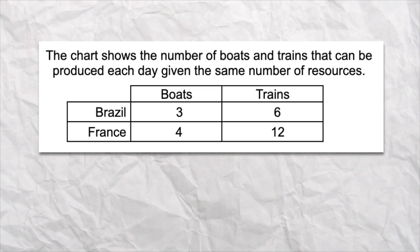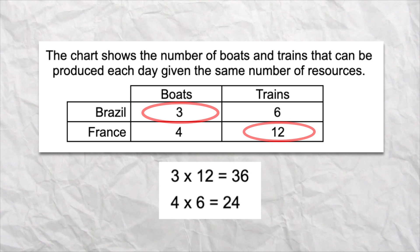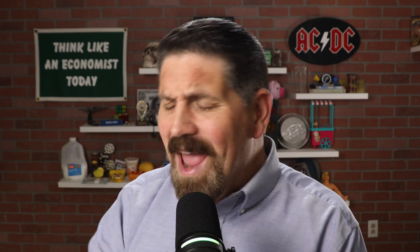Let's try it again. You have two countries, Brazil and France. You have two products, boats and trains. Now to find comparative advantage, you can use the quick and dirty. Three times 12 is 36. Four times 6 is 24. You pick the higher number, 36. Brazil should produce the boats. France should produce the trains. Compared to the longer way of finding comparative advantage, this is way faster and way easier. It's dirty.